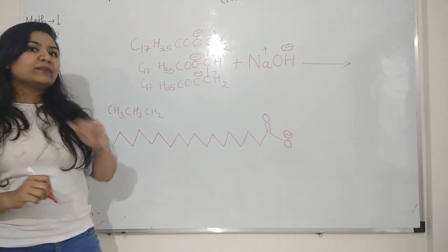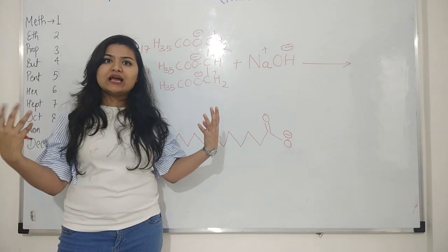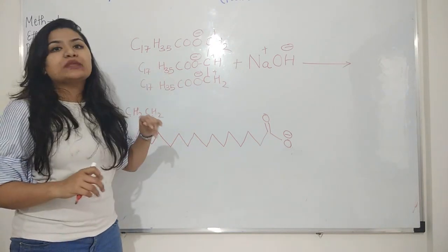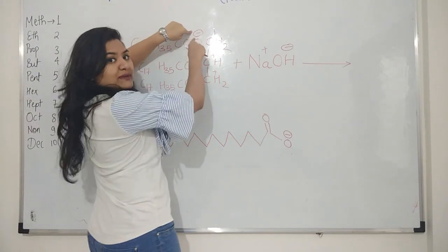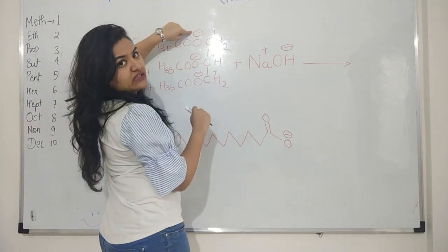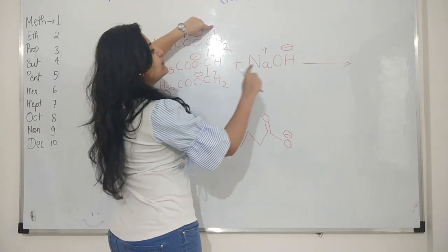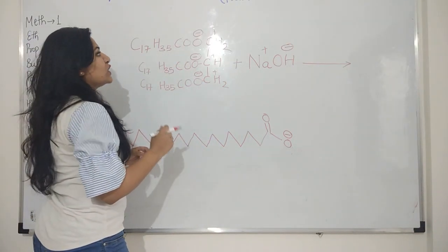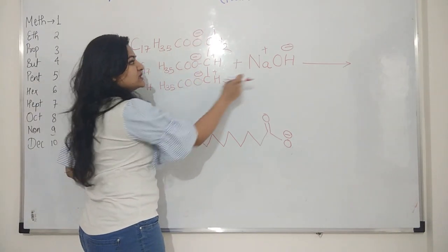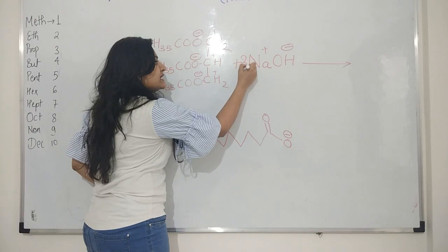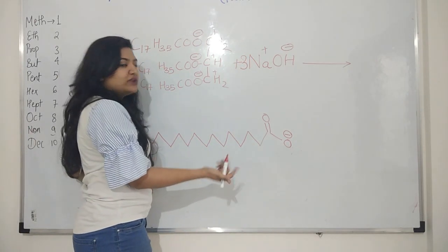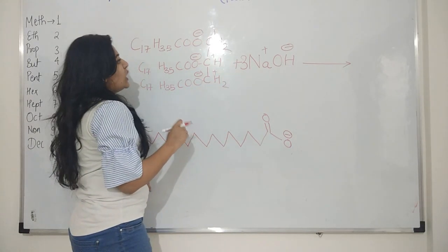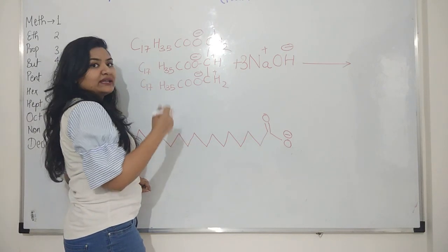If you remember from double displacement reactions, what used to happen? Ions used to exchange with each other. Opposite ions will exchange with each other. So here also the same thing will happen. This minus will be exchanged with positive of this, and this plus will be exchanged with negative of this. Here I have three minuses, here there is only one plus. So to balance that, I will require three molecules of NaOH, so that each of the minuses are balanced with each of the pluses.